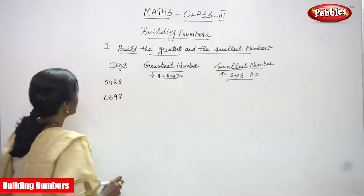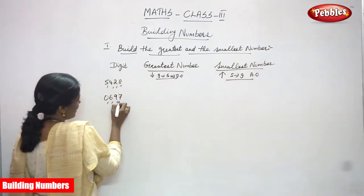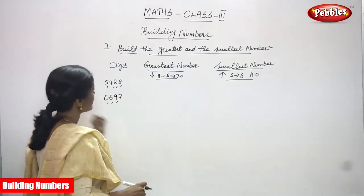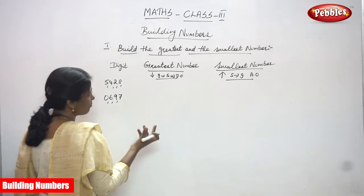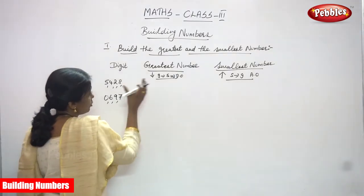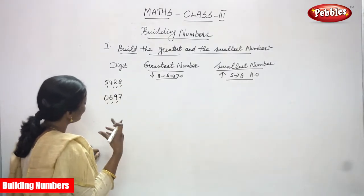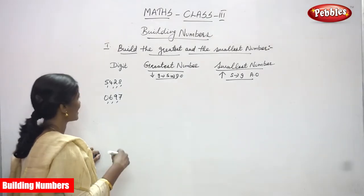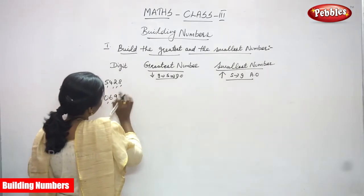So look at the numbers first: 5, 4, 2, 8, 0, 6, 9, 7. Four digits are given. For the greatest number, we have to arrange all the numbers in decreasing order — that is greatest to smallest, called descending order. So first, which one is the greatest? 8.